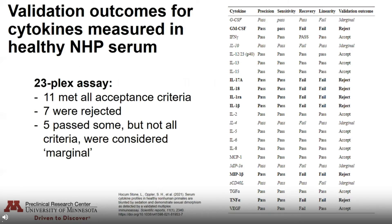When you take these four elements together, you can create validation criteria for your assay. From this 23-plex assay, 11 of the 23 cytokines met all of our acceptance criteria. Seven were rejected, and five passed three but not all four criteria — so we considered them marginal. All of this helps us interpret our results as we go through our experiments.